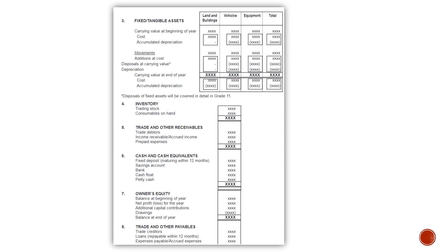Note number three: fixed and tangible assets. This looks complicated, but it's not. Let's have a look at vehicles — not using land and buildings because it does not always have depreciation. You will have your heading with the asset you are working with. First, you will have your carrying value at the beginning of the year: the cost price paid for your vehicle, less accumulated depreciation, which equals your carrying value at the beginning of the year.